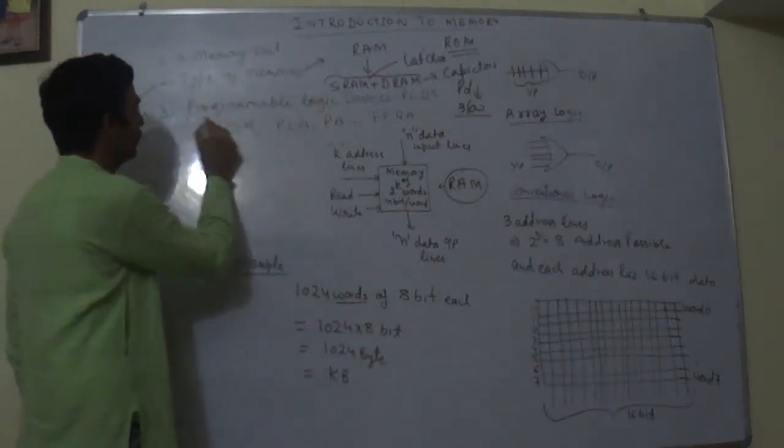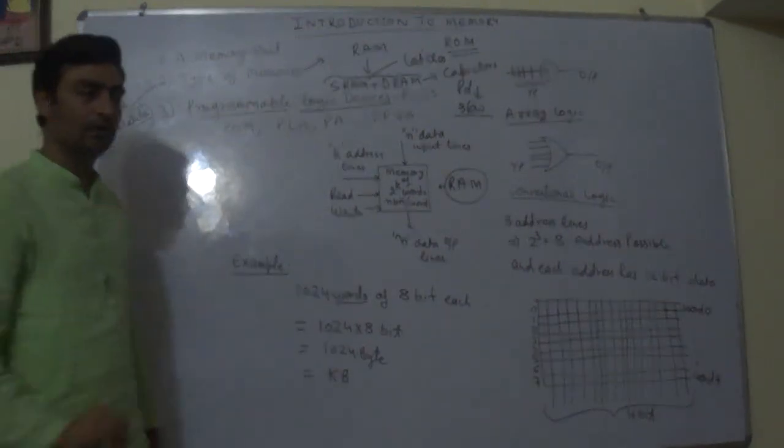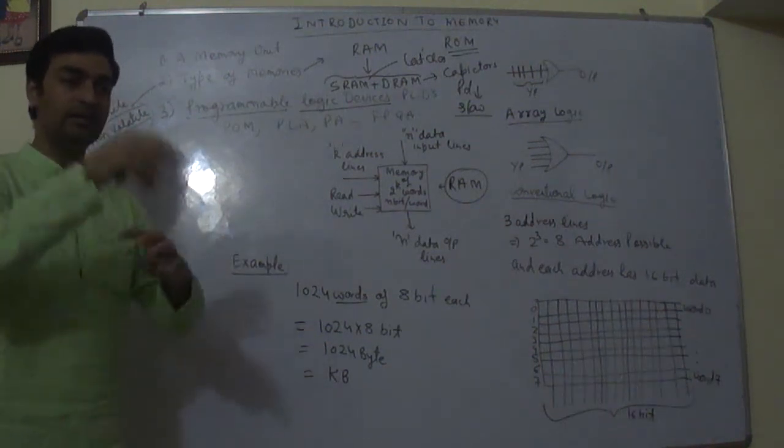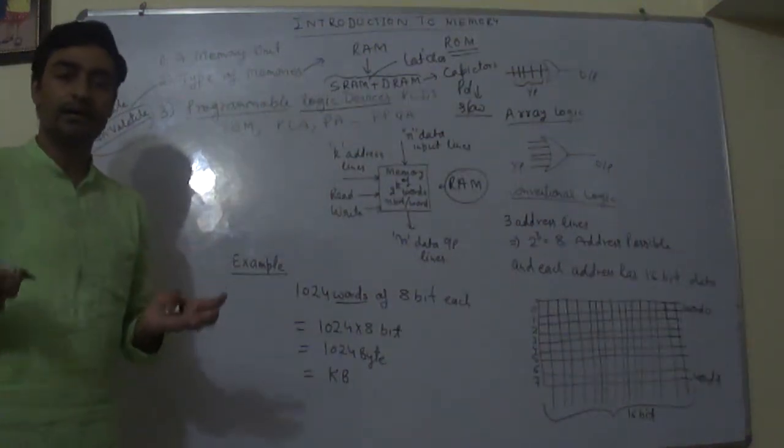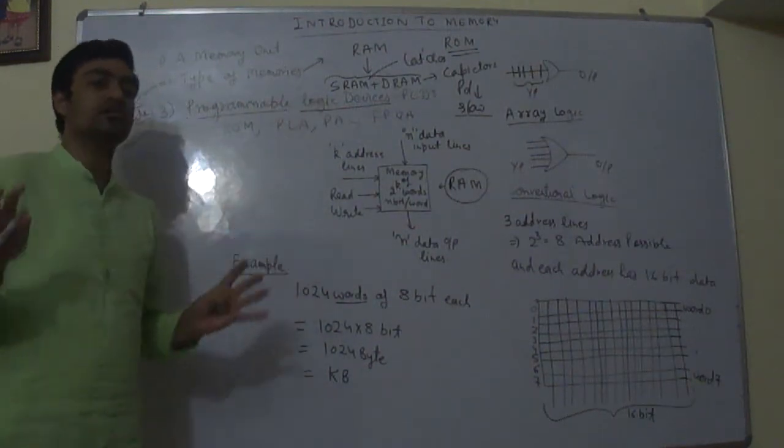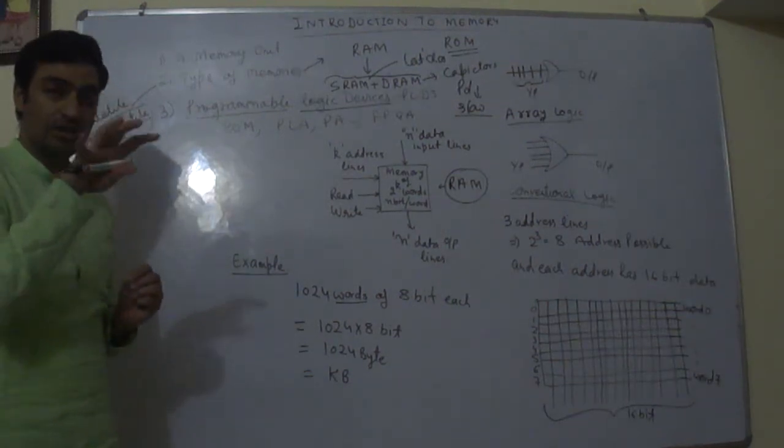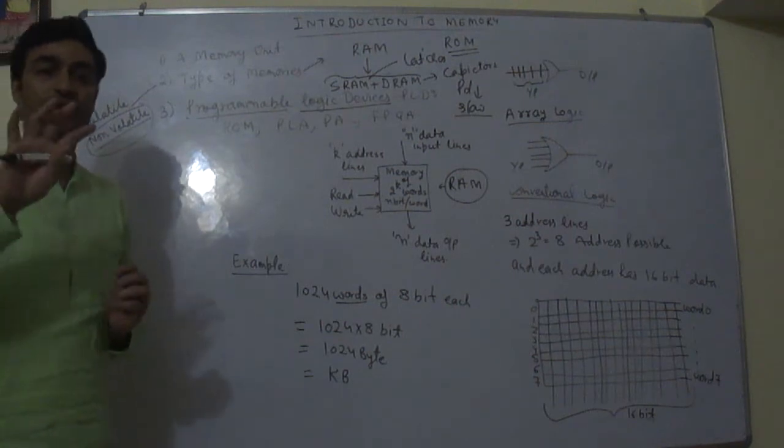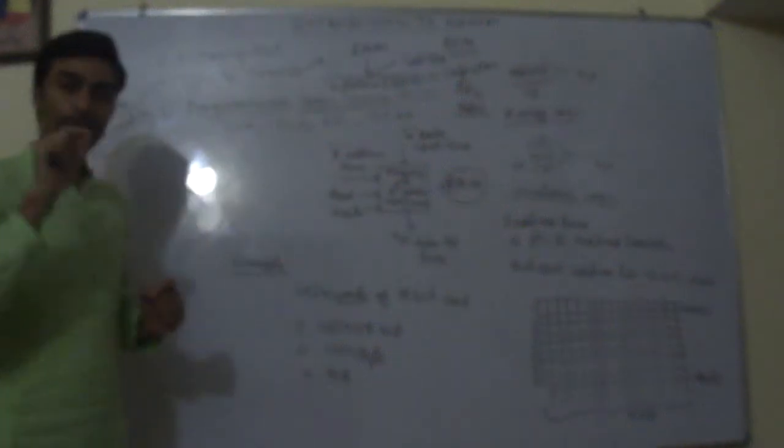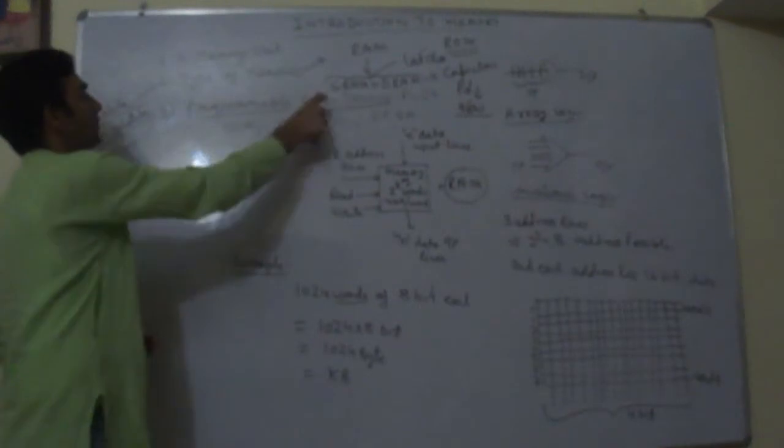Now why do we call it programmable logic device? Logic device is something like AND gate, OR gate. If we change number of inputs to these gates or combination of these gates will create us an expression or functionality. So any kind of functionality can be created using logic gates. Now can we change the connections to create a different functionality? Yes we can change. So that changing of the connections is known as programming of the logic devices.